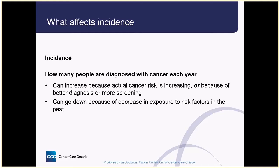If we see cancer incidence rates going down, it could be because there was a decrease in exposure to risk factors in the past. Usually there is a pretty big gap between when someone is exposed to a risk factor and when they are actually diagnosed with cancer. For example, most people who are diagnosed with lung cancer as older adults started smoking many years before as teenagers. So if a lot of people quit smoking today, we'd probably see a drop in lung cancer years from now — and in fact, that's what we've seen in Ontario's population.